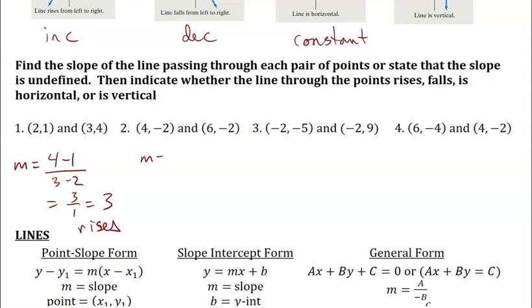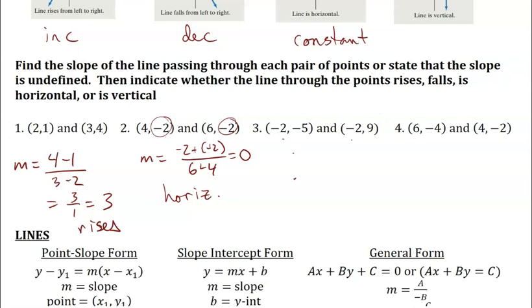For the next pair, I notice that the y2 values are the same. Negative 2 minus negative 2 is zero, so the slope is zero — that's a horizontal line. For the third pair, the two x-coordinates are the same, meaning those two points are on top of each other, so this is a vertical line and the slope is undefined.